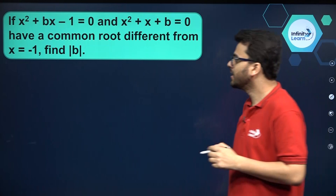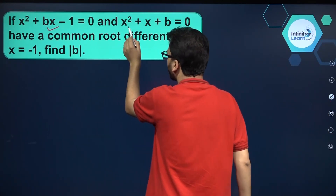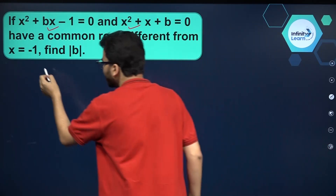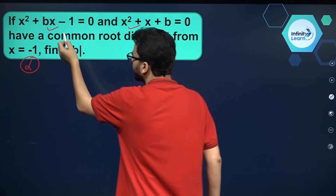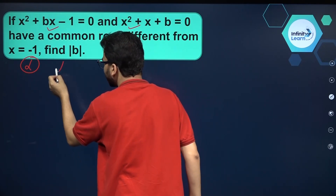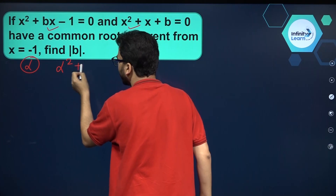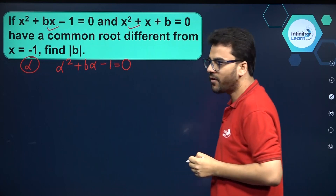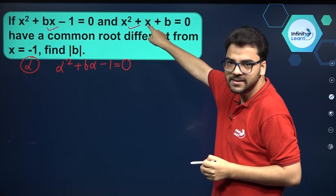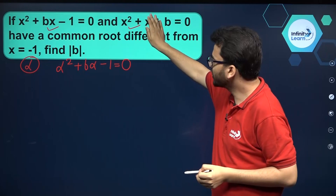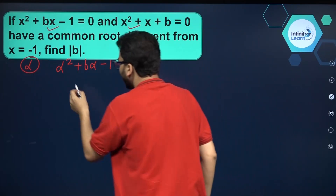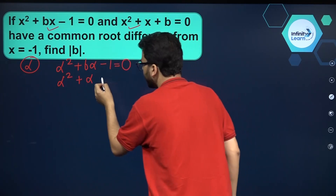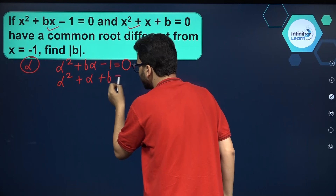Let's start doing it. This quadratic equation and this quadratic equation have a common root. Suppose that common root is alpha. We can put alpha in the first equation — it will satisfy it: alpha² + b·alpha - 1 = 0. And putting x = alpha in the second equation, it also satisfies it: alpha² + alpha + b = 0.